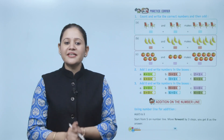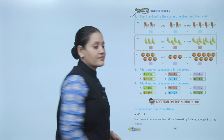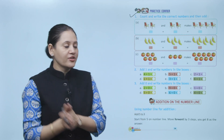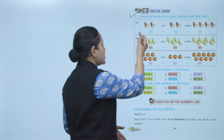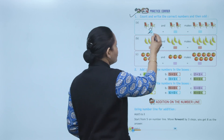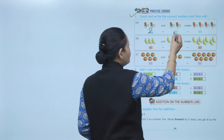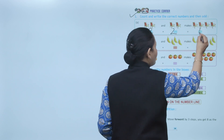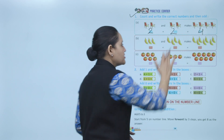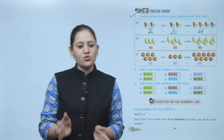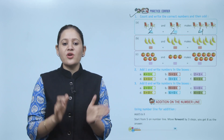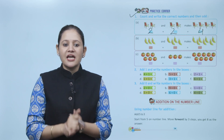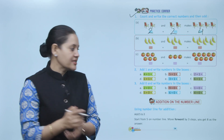Next is practice corner. Count and write the correct number, then add. First count the number of objects: two chairs, so we write two, and again two chairs. Two plus two equals four chairs. First count the objects and then add them. Next, add one and write the number in the boxes.